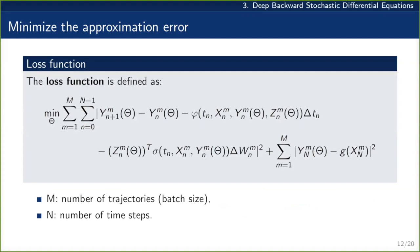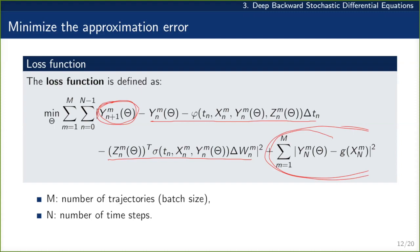The loss function looks a bit sophisticated but isn't too crazy. You have the prediction and we take the difference between the prediction and what we use as a ground truth — the Euler scheme based on the previous prediction. There is also a last term which is the difference between the prediction and our terminal condition that we know.